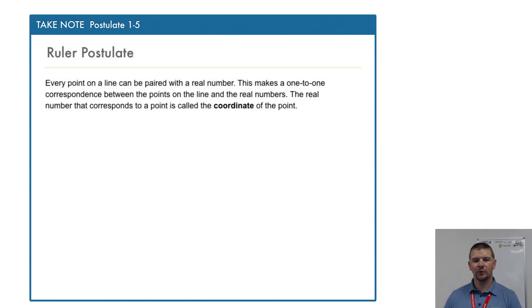Every point on a line can be paired with a real number. This makes a one-to-one correspondence between the points on the line and the real numbers. The real number that corresponds to a point is called the coordinate of the point.